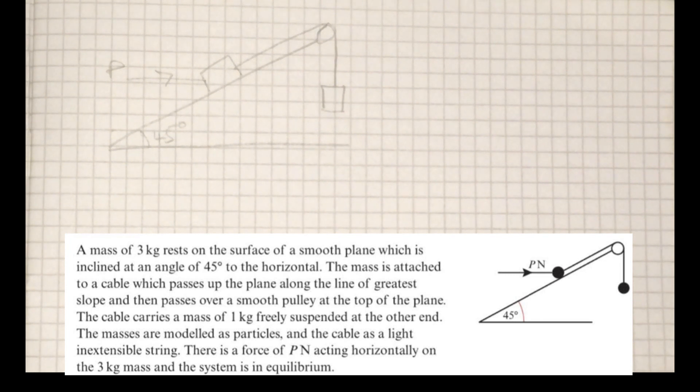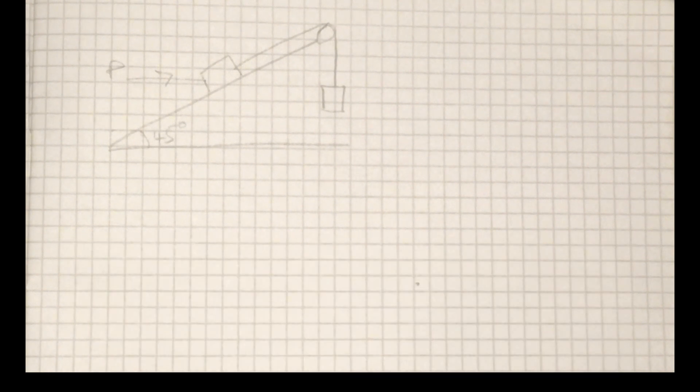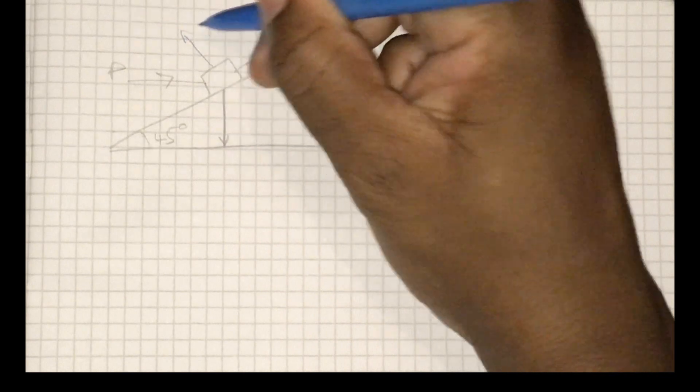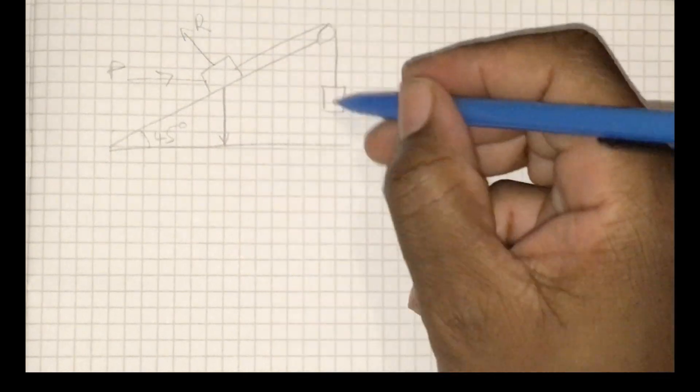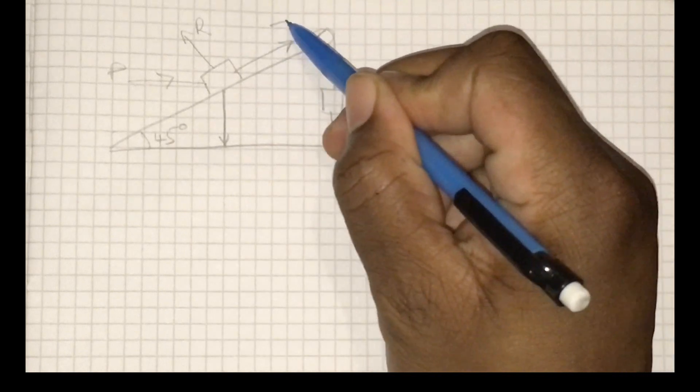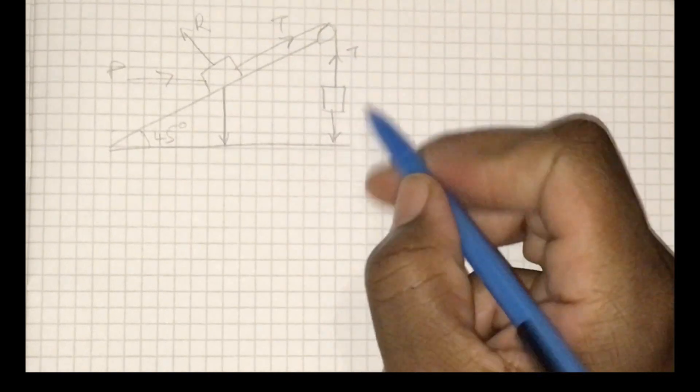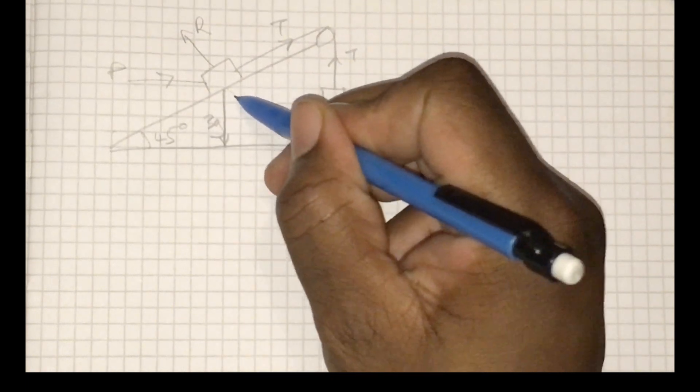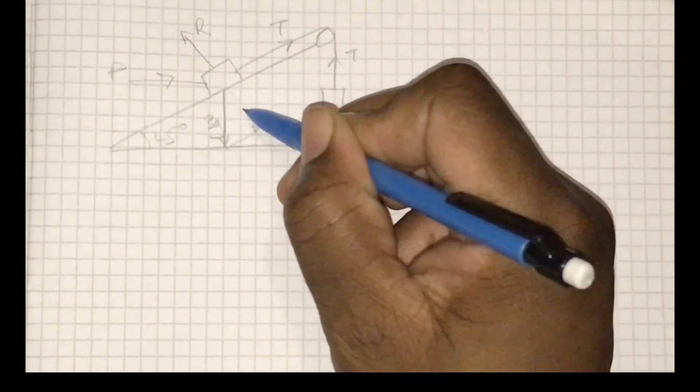Because we're working on the incline plane, I straight away want to make sure I've got all of the necessary forces involved. So we'll go ahead and add weight, a reaction force, the weight of the hanging particle, and because we're working with a string going over a pulley, we have tension.